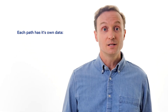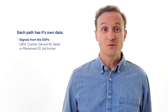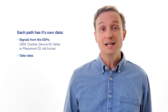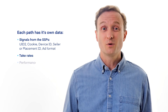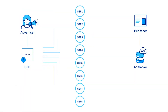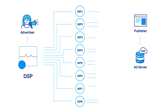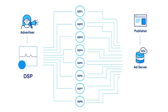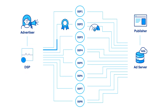Each of those paths has different components. It has different signals that come from the SSP, it potentially has different take rates from the SSP, and it potentially also has different performance due to all of the other factors that comprise that singular pipe to the inventory. So what we have the benefit of doing on the demand side is evaluating all of that data across all of the available paths or routes to that supply, and then making an effective decision on an impression-to-impression basis as to which route is going to be most effective for the marketer at that moment in time on that impression.